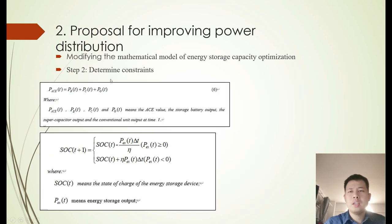Step two is determining the constraints. We have to maintain the power adjustments of all parts should be equal to the AC value of the system, and we have to maintain that output power of energy storage device should be less than the rated power.